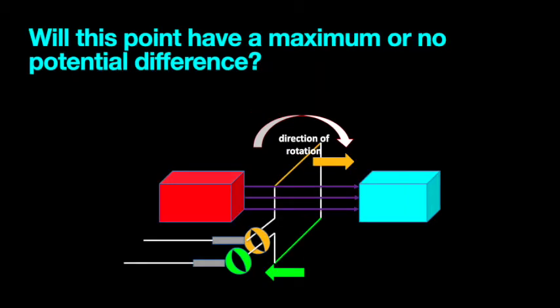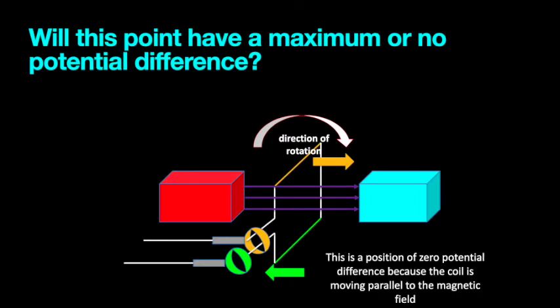What about this situation here? Do you think this point will induce a maximum potential difference or no potential difference at all? Pause the video and think. Based on what we said earlier and the language I used, at this point the coil is not cutting the magnetic field lines. Therefore, no potential difference is induced.